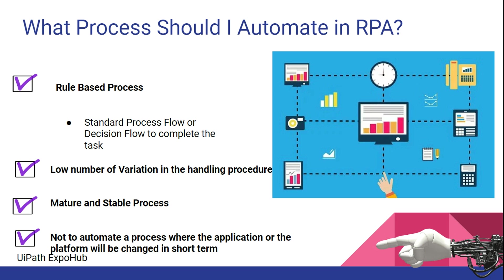The next rule is low number of variations in the handling procedure. Your process should be very standard. For example, if the criteria for a condition changes — like employee experience threshold — that is a variation. Such variations should be very low in number. There will always be some process improvements, but if those variations are frequent, you'll have to redesign the entire workflow every time.